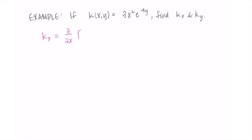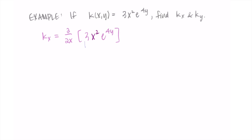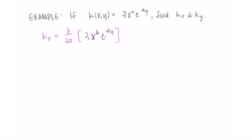We're taking the partial derivative of 3x squared e to the 4y with respect to x. X is the only variable we're looking at, so x squared is the variable and everything else is a constant — really just a big constant multiplied by x squared. The constant 3e to the 4y stays around, and we multiply by the derivative of x squared, which is 2x. Combining, we get 6x times e to the 4y.